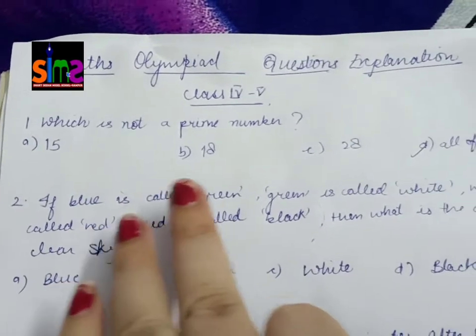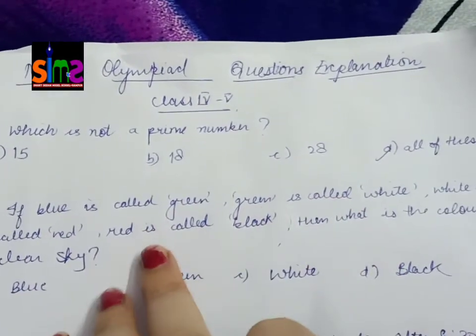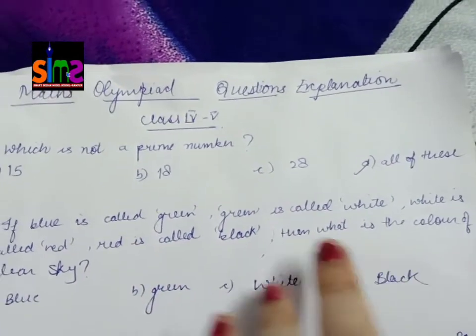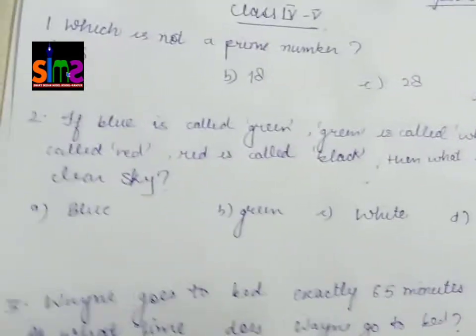Next question: if blue is called green, green is called white, white is called red, red is called black, then what is the color of clear sky? Look at this question carefully.